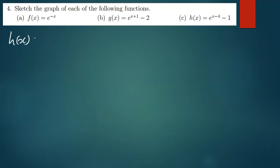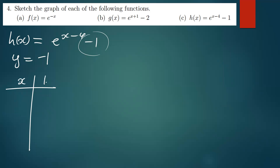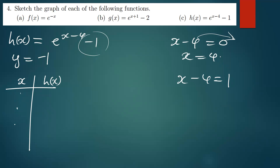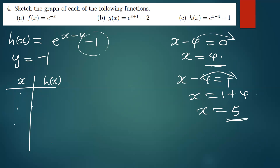The last function is h of x equal to e to the power x minus four, minus one. The horizontal asymptote is y equals negative one. For the table of values, we equate x minus four to zero, giving x equals four, and equate x minus four to one, giving x equals five. So our two x values are four and five.